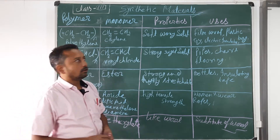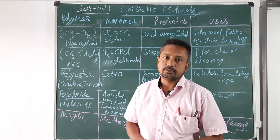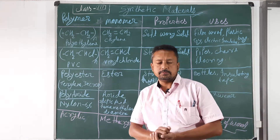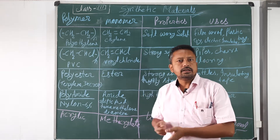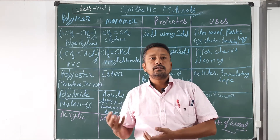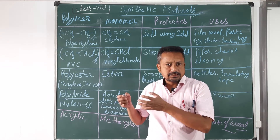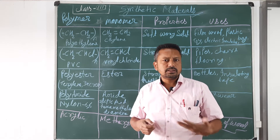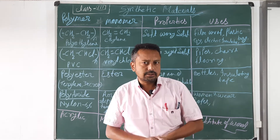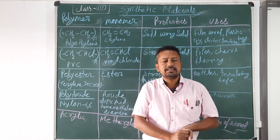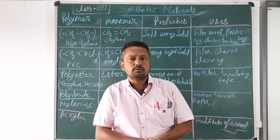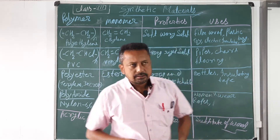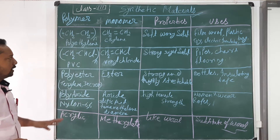Welcome again to this video on synthetic materials for Class 8 students. We have already discussed monomers and polymers. Monomers are smaller units or smaller compounds, and when these smaller units join together — up to 10,000 units or more — larger complexes are formed. These larger complexes are in the form of fibers, which are called polymers. Here is a list of some monomers and polymers.